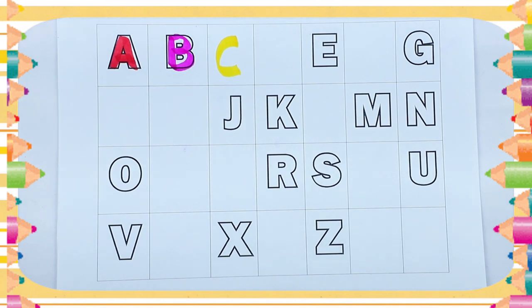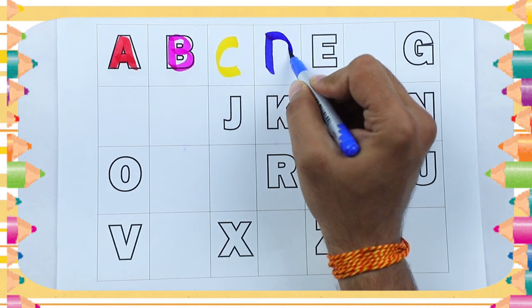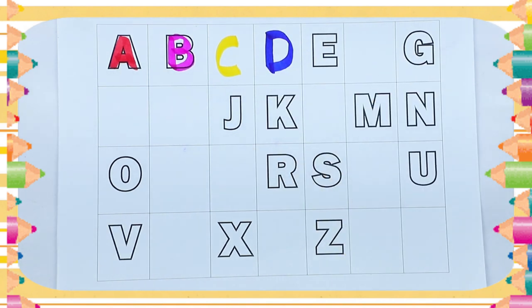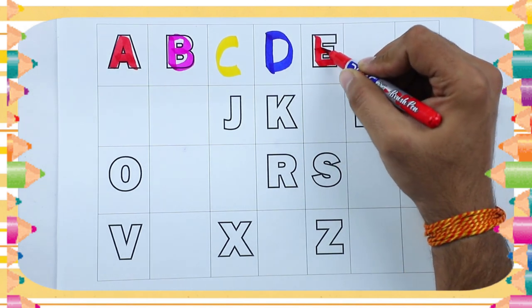What next? Tell me. Yes, right. It's D. D for dog. And red color, E for elephant.